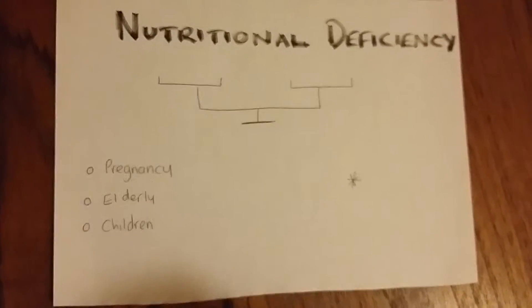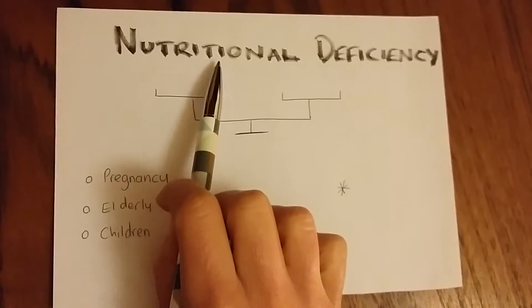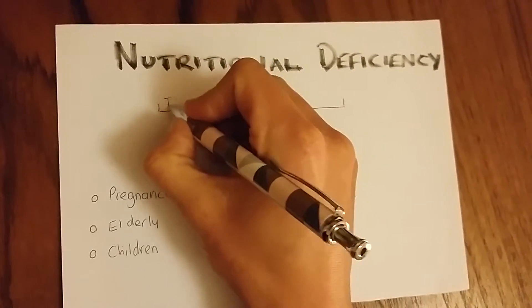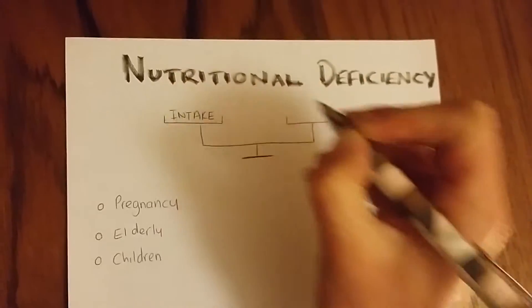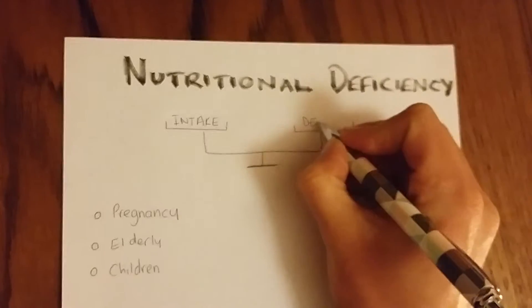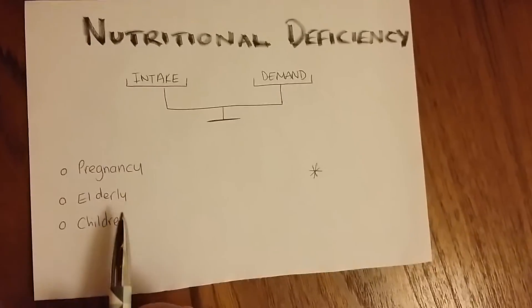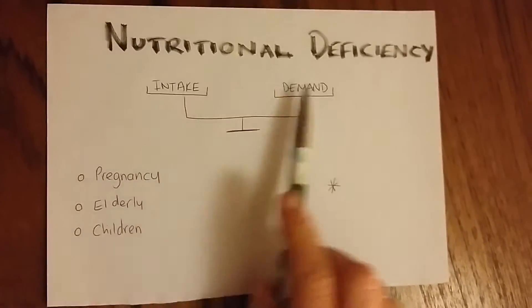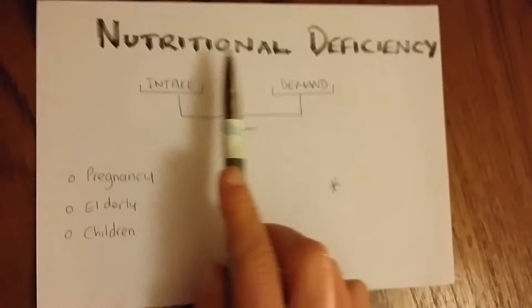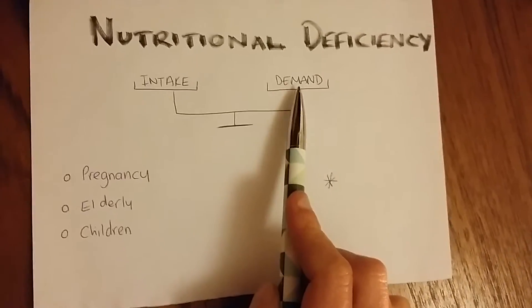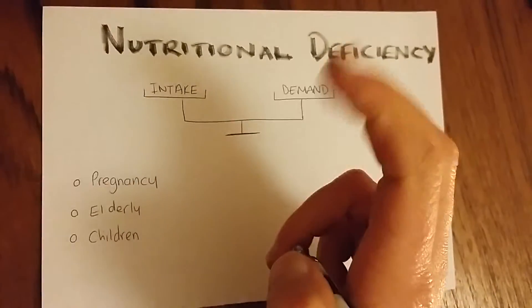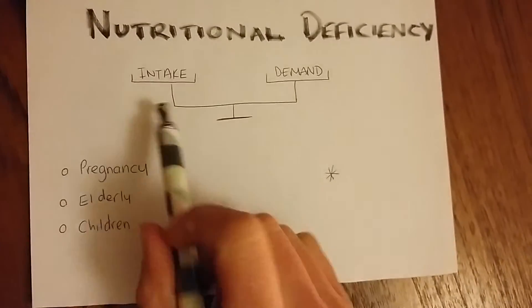Now some people get caught up on the fact that it's about activity, but remember we're talking about nutritional here — this is also including micronutrients, this is what we're really talking about. We need to look at the balance between the intake that person has and the demand they are going through. Certain populations — pregnancy, elderly, and children — they may suffer in their intake, but generally even if their intake is about right they also have a higher demand for micronutrients in their body.